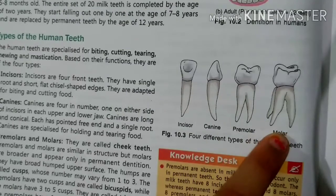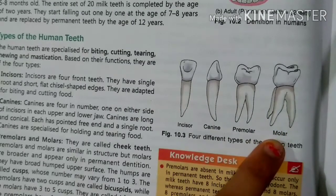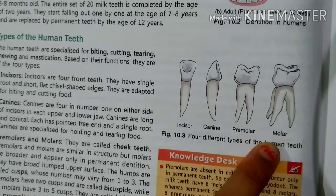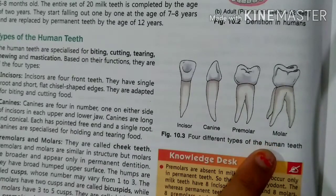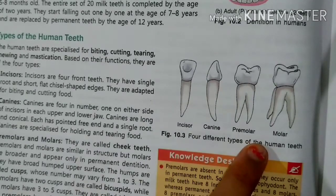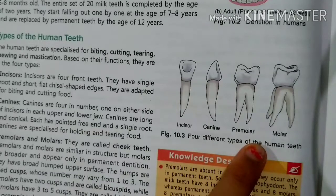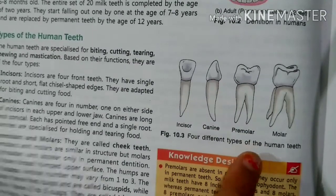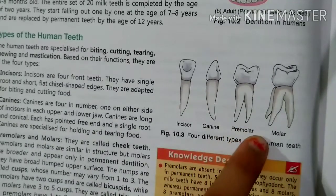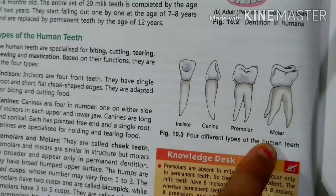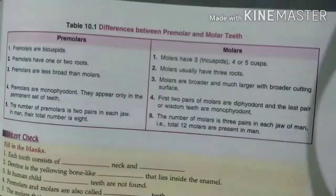Premolars and molars are called cheek teeth. They are similar in structure, but molars are larger and appear only in permanent dentition. They have a broad upper surface with cuspids — premolars have two cuspids, which we call bicuspids, while molars have three to five cuspids, which we call tricuspids. Premolars may have one or two roots while molars usually have more than two roots. Premolars and molars are adapted for mashing, crushing and grinding food.